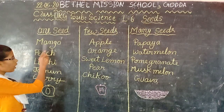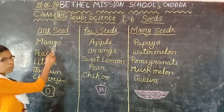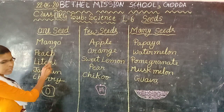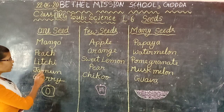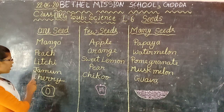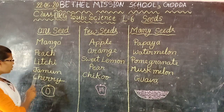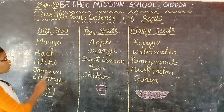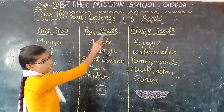With spellings: micro — M-A-M-E-O; peach — P-E-A-C-H; litchi — L-I-T-C-H-I; jamun — J-A-M-U-N; cherry — C-H-E-R-R-Y. These are all one-seed fruits.